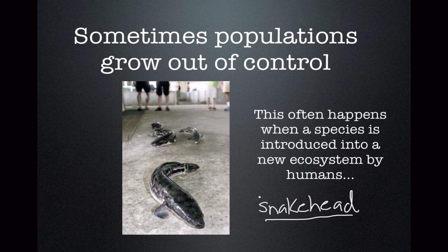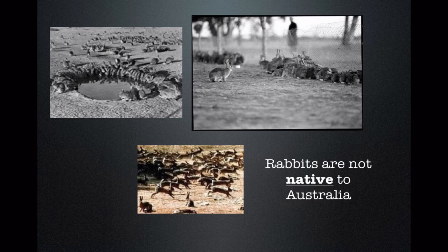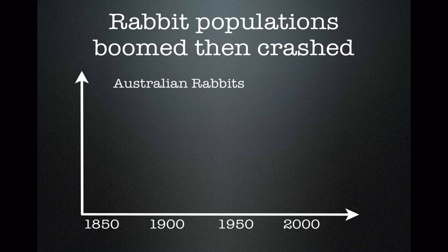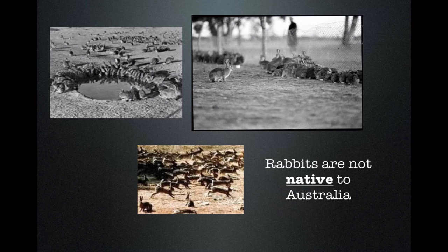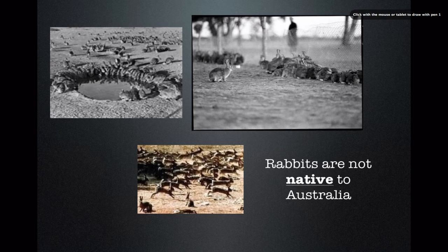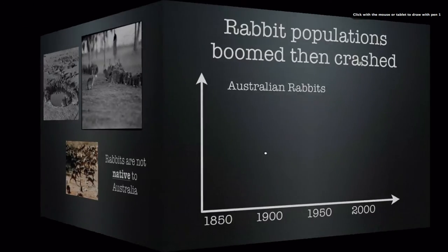Sometimes populations can grow out of control. My favorite example of an invasive species is what rabbits did to Australia. Here are some pictures: rabbits around a waterhole, rabbits against a fence that prevents them from crossing, and kind of a rabbit stampede.